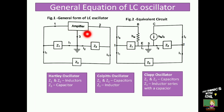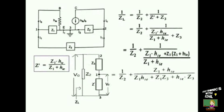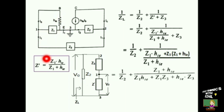This is the equivalent circuit of the general form of the LC oscillator. Here, the amplifier is replaced by its hybrid equivalent model, in which the input impedance hie and forward current gain hfe are taken into account. The reverse voltage gain hre and output admittance hoe are neglected for analysis. In the input side, the impedance Z1 is connected in parallel with hie. The parallel combination of Z1 and hie is given by Z1·hie divided by Z1 plus hie, and it is named Z-dash.